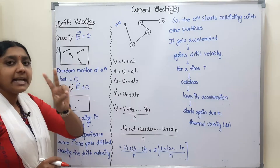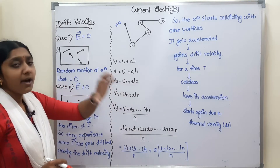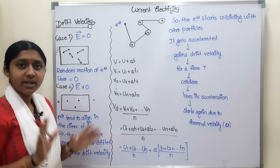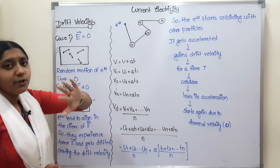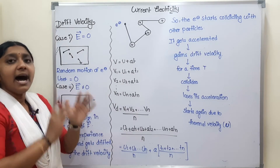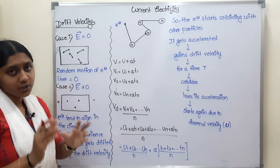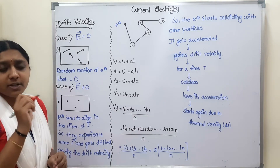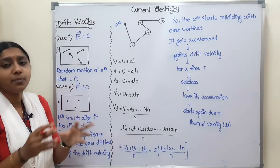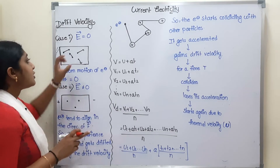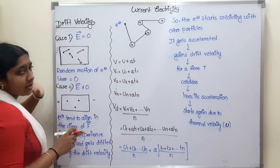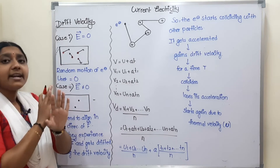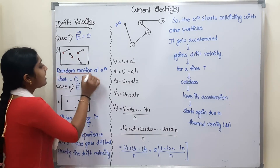Now we are going to take two cases in Drift Velocity. First, we are going to take a conductor — a metal. In a metal, we have positive ions and a sea of free electrons. There are very many electrons moving around the positive charge ions in the metal.